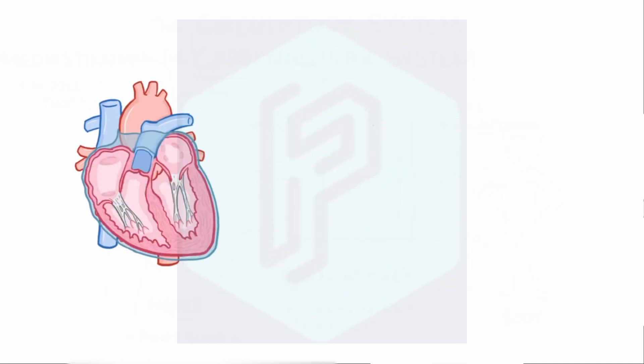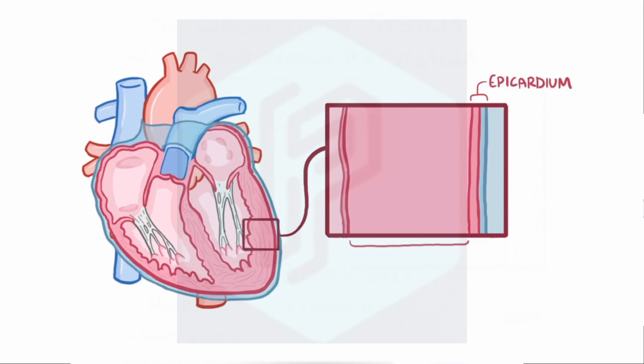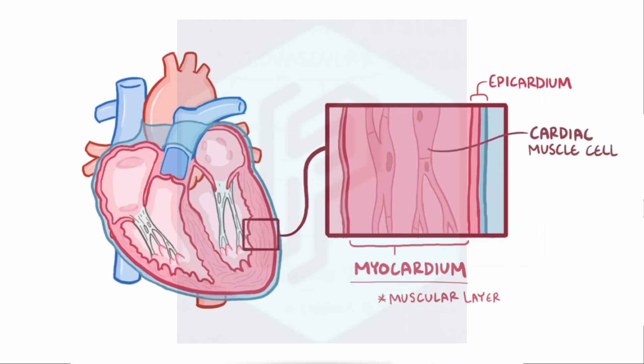So, moving from the outside of the heart to the inside of the heart, after the epicardium there's the myocardium, which is the muscular middle layer. This forms the bulk of the heart tissue because those cardiac muscle cells contract and pump blood.